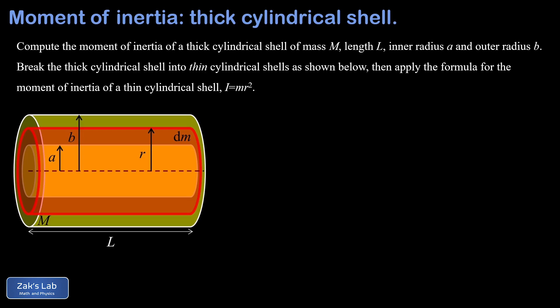We're told the mass of the entire thing is M and the length is L. We're given a strategy for how to compute the moment of inertia: break it into nested thin cylindrical shells with a mass of dm, then find the moment of inertia contribution of each of those thin cylindrical shells using the formula for a thin cylindrical shell, which is just mr².